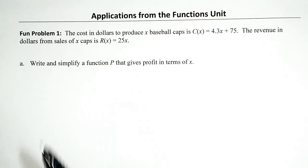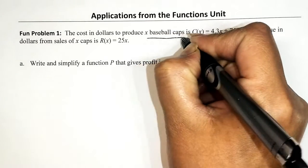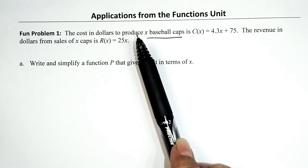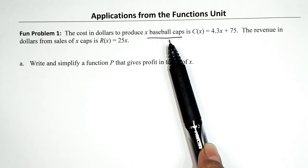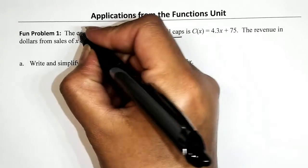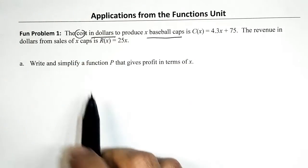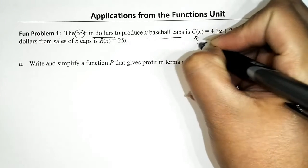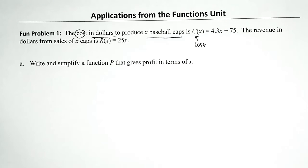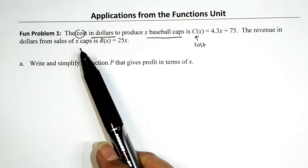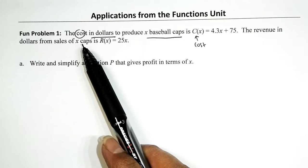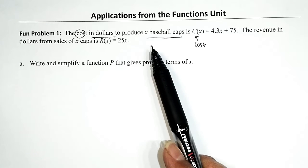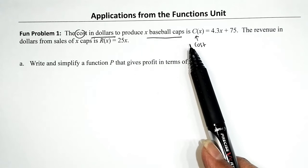So what's so special about X? X represents the number of baseball caps. How do we calculate the cost — and the unit is in dollars — the cost is given by this function. I really like how they named it C instead of F, G, or H — they picked a name appropriate to what they're trying to find, which is the cost to produce this number of baseball caps.